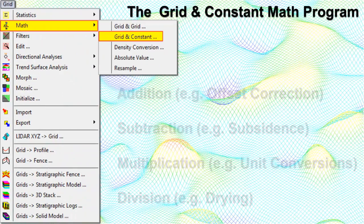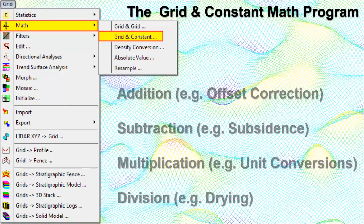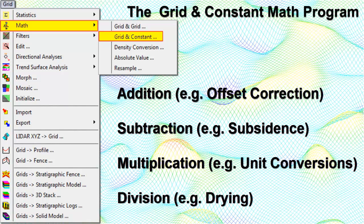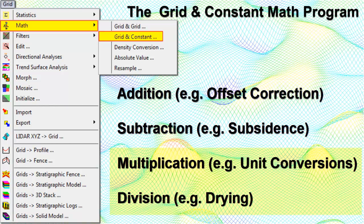The Grid and Constant Math program performs arithmetical operations with the node Z values in a single grid model and a constant or a user-defined polynomial equation. Examples include adding or subtracting a constant to correct for a measurement error in a grid file representing surface elevations, and converting a grid file from meters to feet by multiplying the original grid nodes by a constant conversion factor.